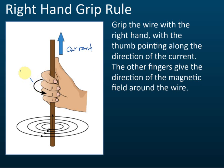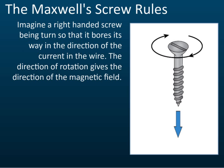The thumb shows the direction of the current and the other four fingers show the direction of the field. So if the current goes up, the fingers curl anti-clockwise, meaning the field is anti-clockwise. That is how we use the right-hand grip rule to determine the direction of the field.